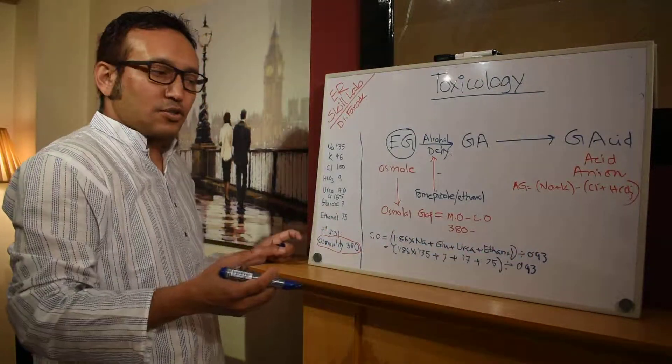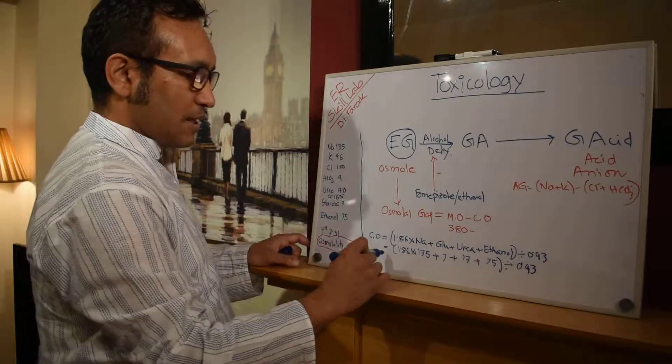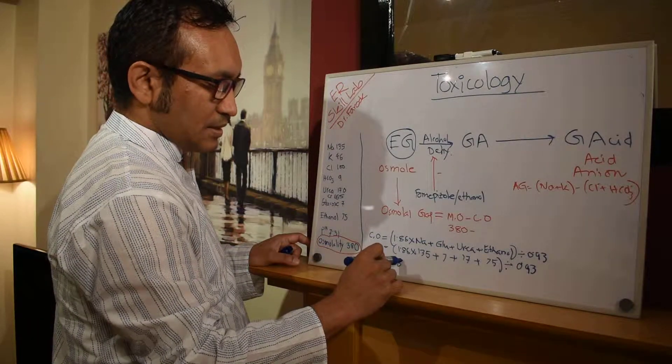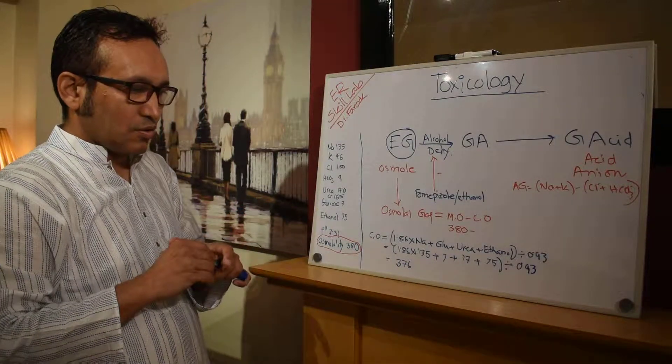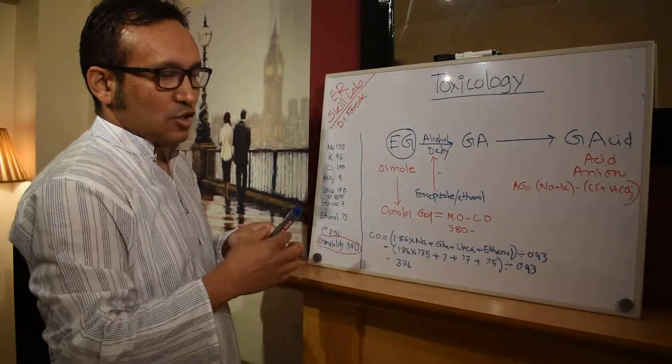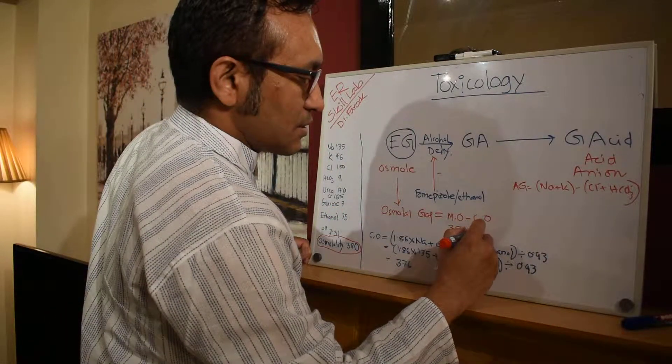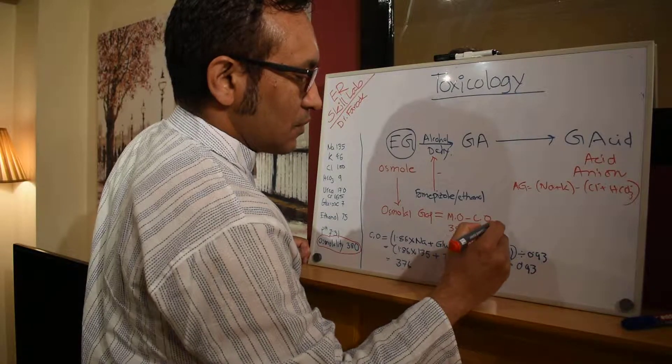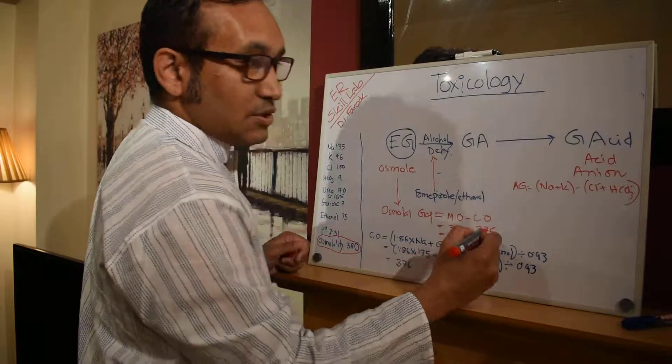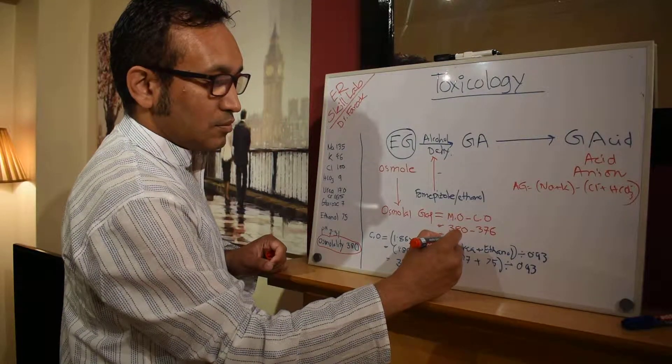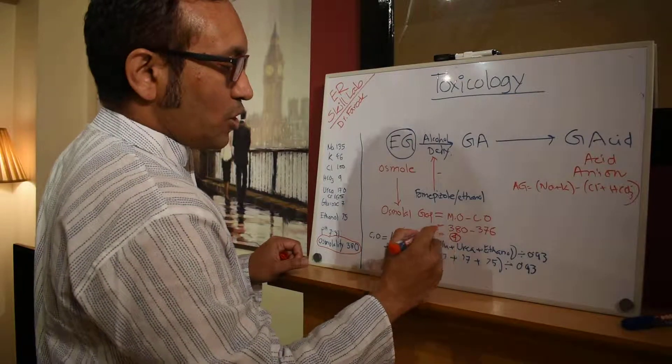You're allowed to use calculators to do this. Once you've done this the result will be 376 milliosmol per liter. So we know this calculated osmolality, if you plug in here 376, the 380 minus 376 is 4. So osmolality gap is 4.